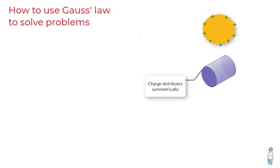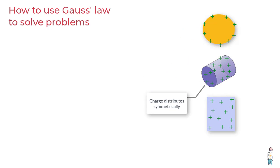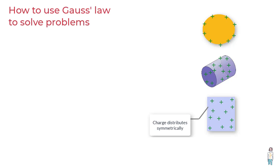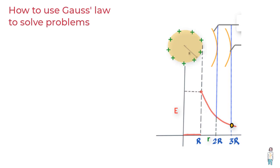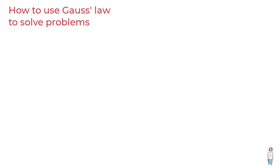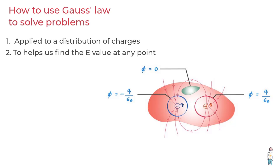Hello and welcome to the lesson where we finally move from the theory of Gauss's law to making use of it in solving physics problems. So what we've understood so far is that Gauss's law can be applied to a distribution of charges and for any shape of closed surface through which flux passes, and we might be interested in finding the electric field at the surface or a point on this surface.